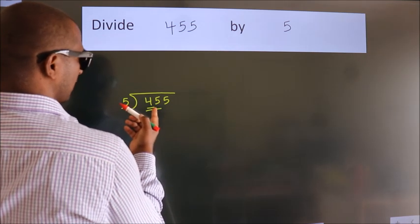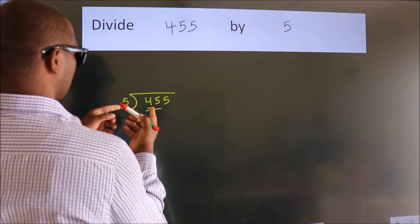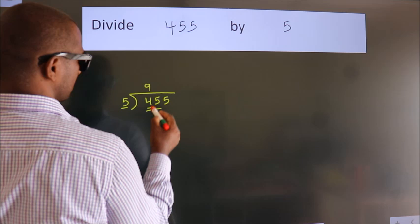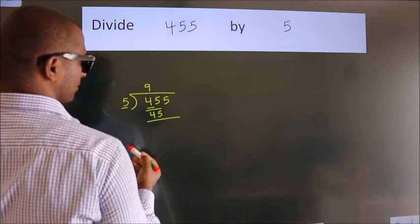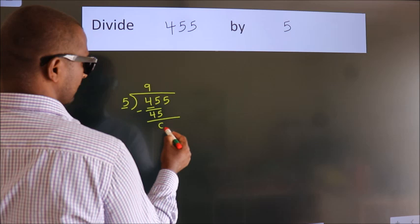When do we get 45 in the 5 table? 5 nines, 45. Now we should subtract. We get 0.